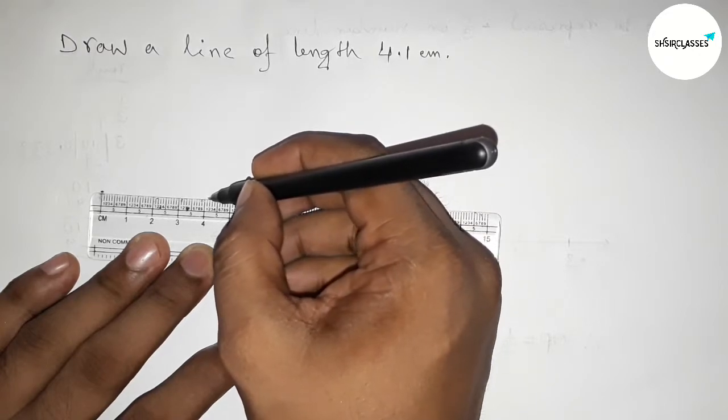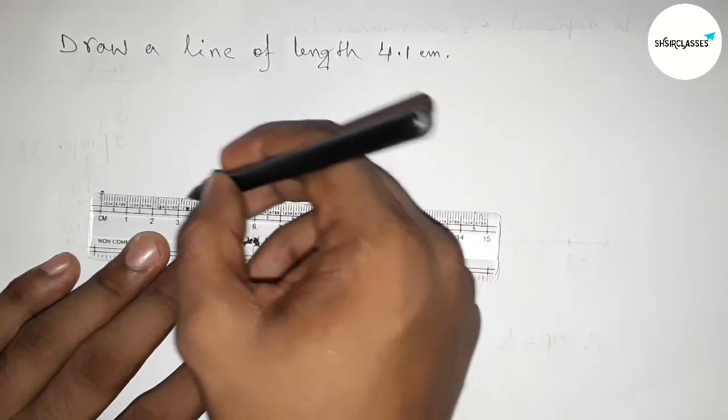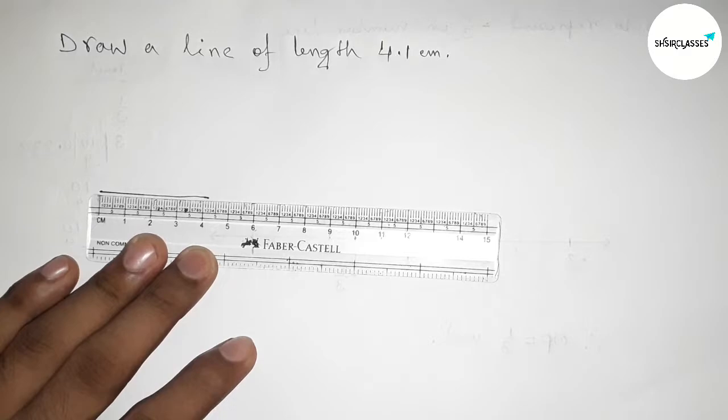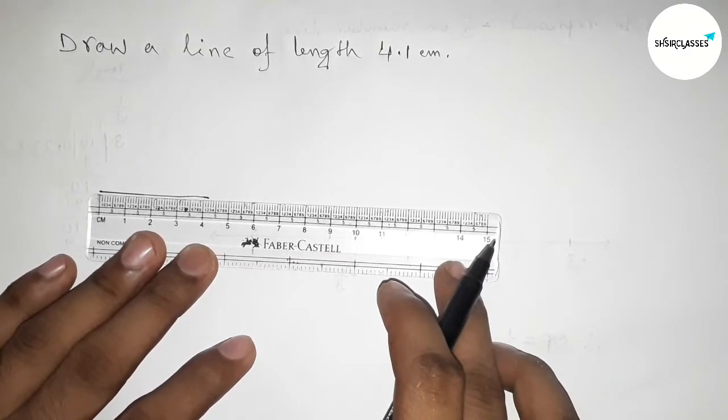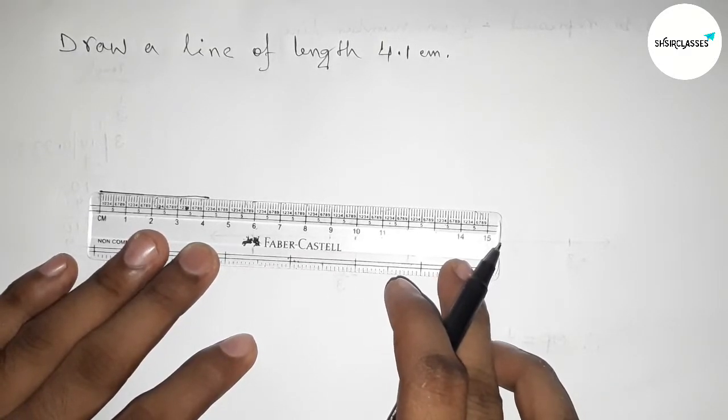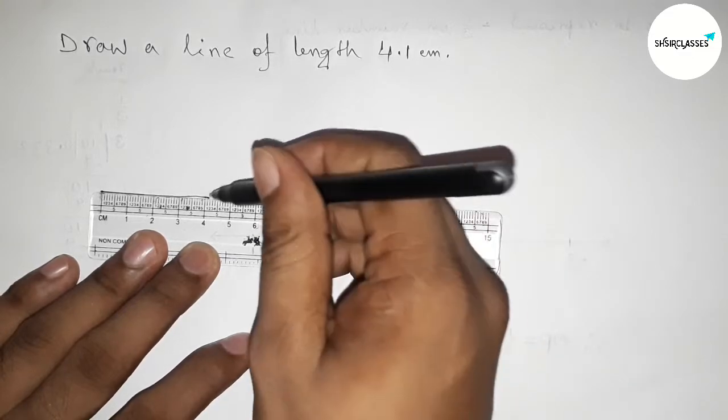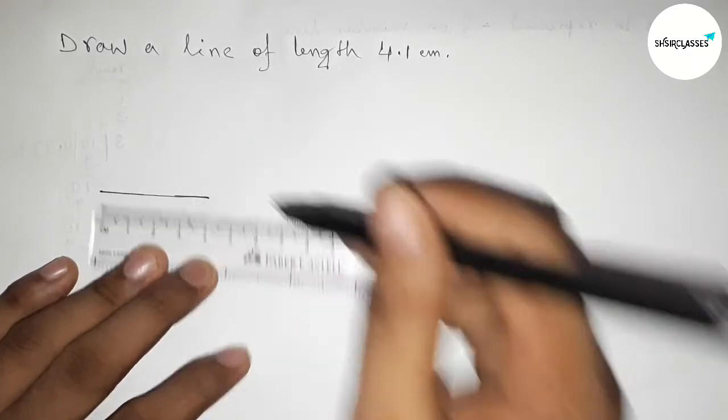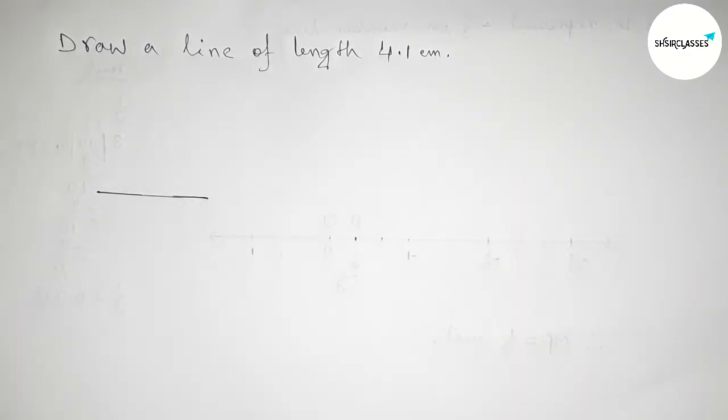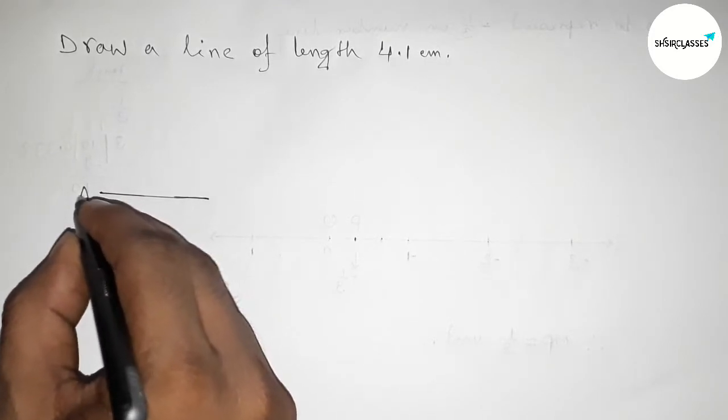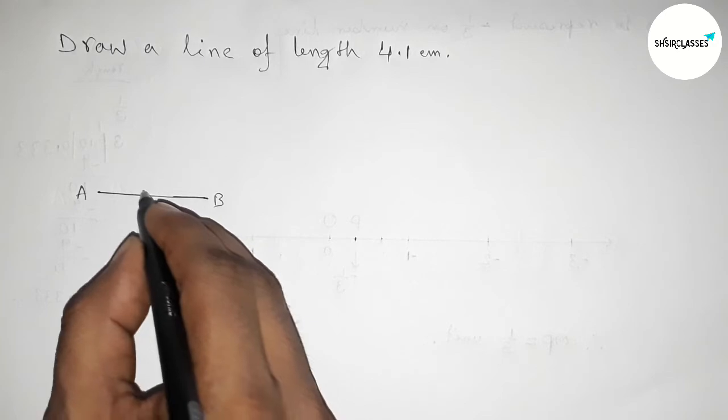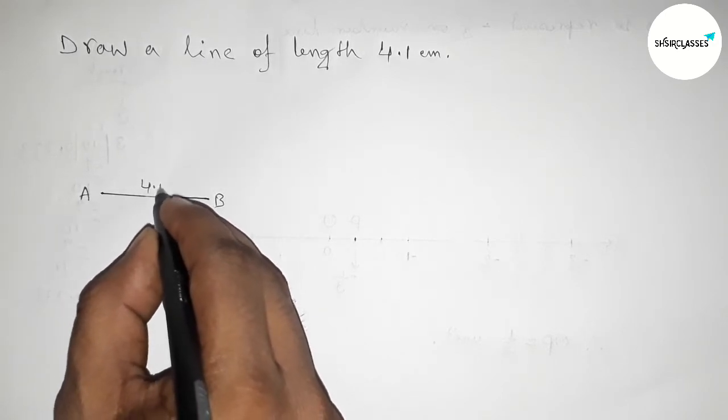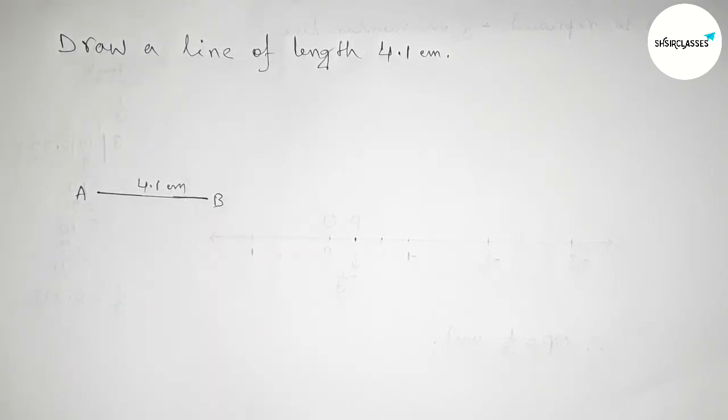So this is 4.1 centimeters. And joining this, okay, so perfectly joining this line first. So joining this and taking here a point, here A and here B. So AB is a line of length 4.1 centimeters.